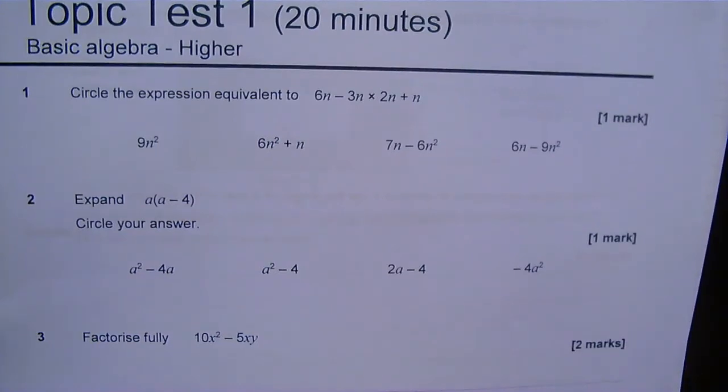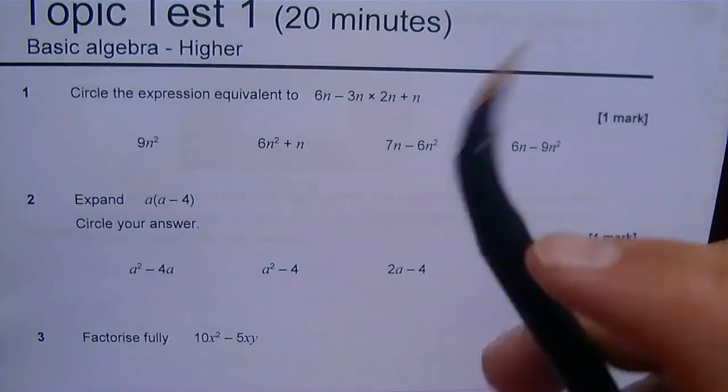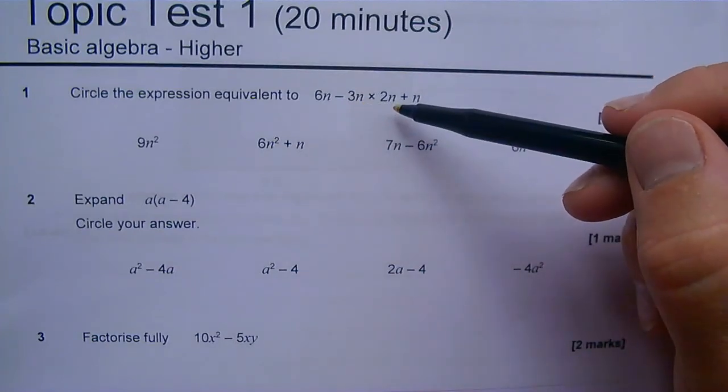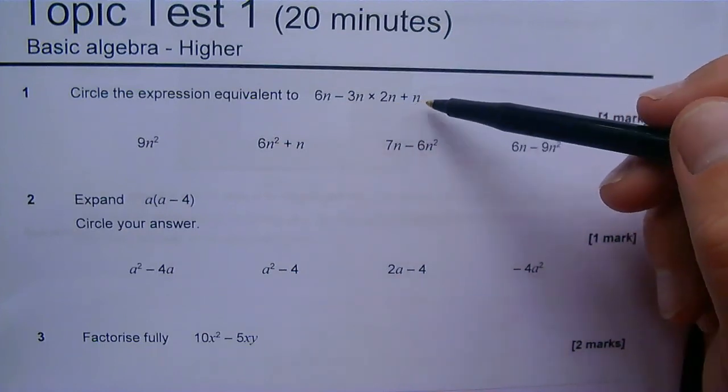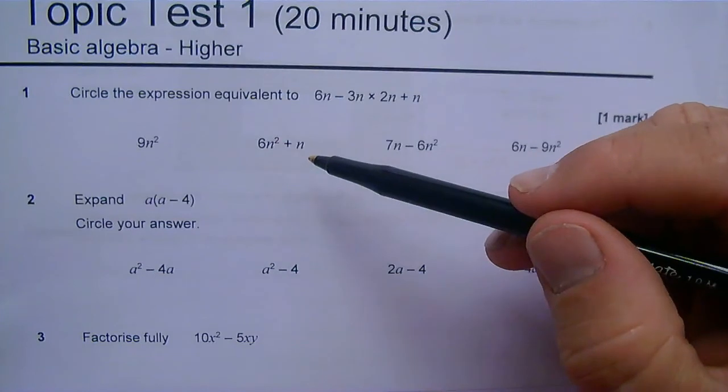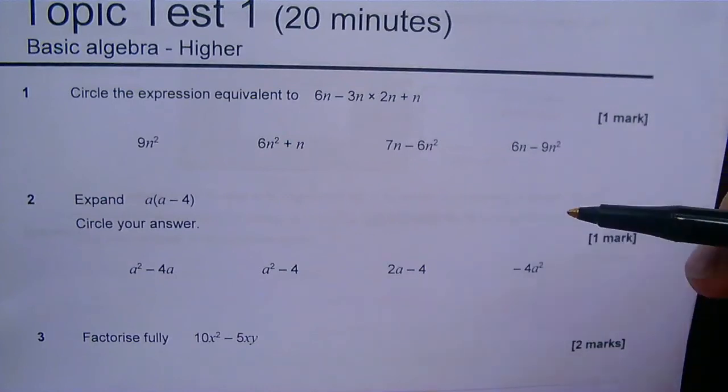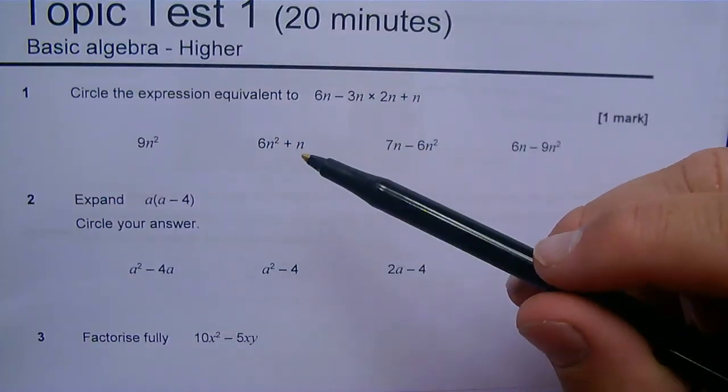First thing to note is that multiple choice questions are designed to catch common misconceptions. The common misconception here is to rush through and say 6n take away 3n gives me 3 lots of n. 3 lots of n times by 2 lots of n gives me 6n squared, and I add 1n here, 6n squared plus n. Look, one of the answers matches so it's very likely to be correct. That is not right. They intentionally designed these to catch you.